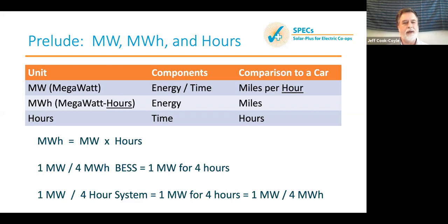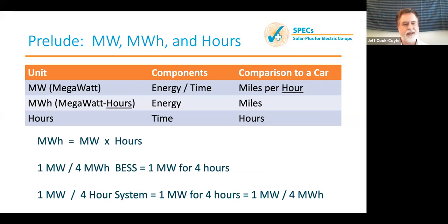A megawatt is a measure of power, which is energy divided by time. A megawatt corresponds to miles per hour in speed — distance divided by time — as opposed to a megawatt hour, which is the amount of energy and corresponds to miles. That word 'hours' is part of the energy measurement, which is really counterintuitive, not the power measurement. Megawatt hours are megawatts times hours. So a one megawatt, four megawatt hour battery energy storage system — BESS — means you could get one megawatt of discharge for four hours.